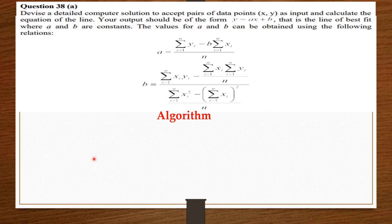Devise a detailed compute solution to accept pairs of data points as input and calculate the equation of the line. Your output should be of the form y equals ax plus b — that is, the line of best fit — where a and b are constants.